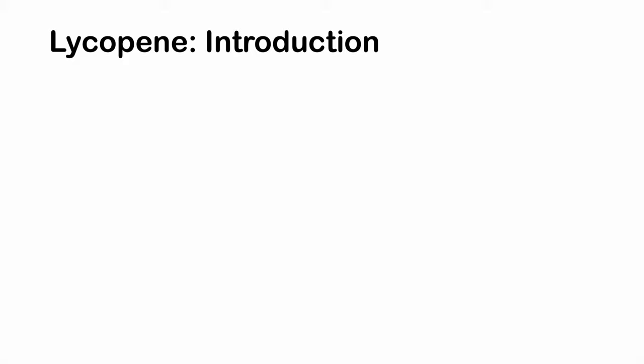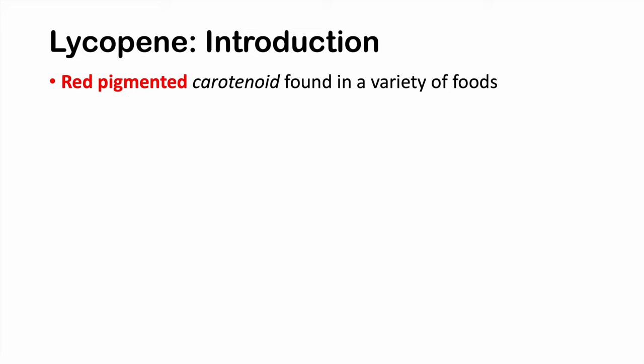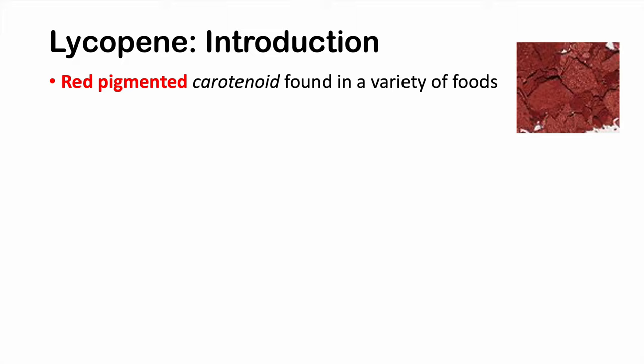What is lycopene? Lycopene is a red pigmented carotenoid found in a variety of foods. It is red in coloration. It is a carotenoid, which is a fat-soluble compound, and it's found in a variety of foods. It gives a lot of fruits and vegetables their red and oftentimes orange coloration.